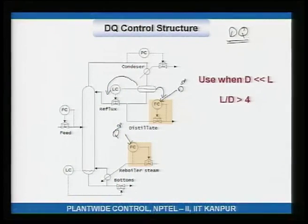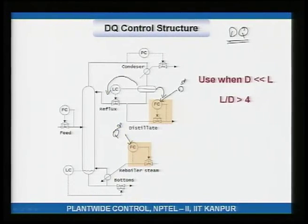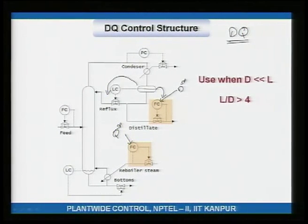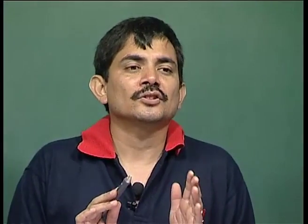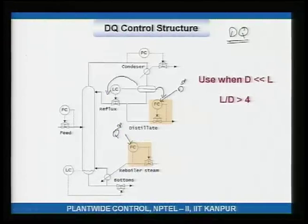After the level and pressure controllers are fixed, what remains for the operator are the distillate flow rate and the steam flow rate. This is called a material balance structure: when you change the distillate rate, you directly change the material balance around the column. For example, if the feed is 100 and you change the distillate from 50 to 60, you have directly changed the split occurring in the column.